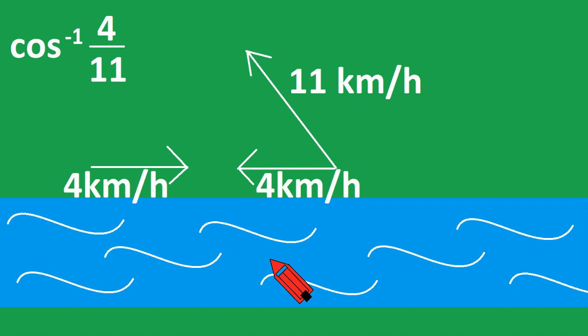We're going to use cosine because we have adjacent and the hypotenuse. So we're going to take the inverse cosine of 4 over 11, and that equals 68.67 degrees.